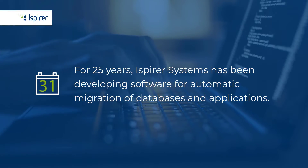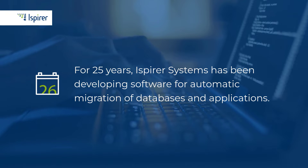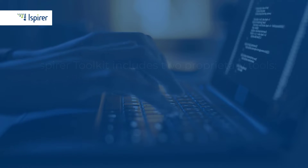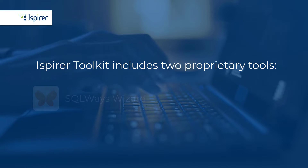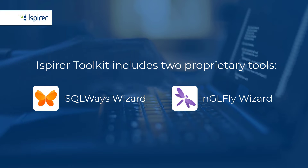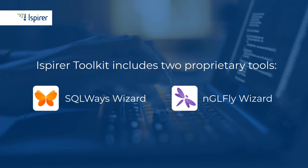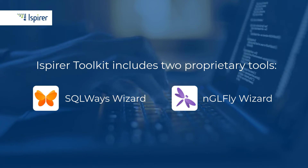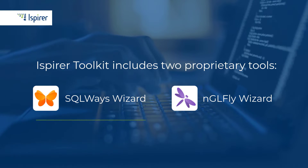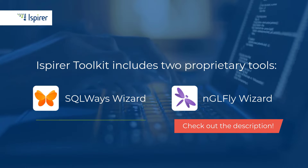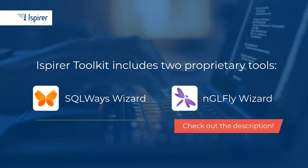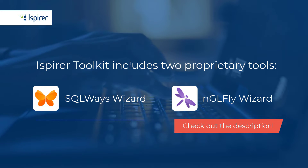Throughout its 25-year history, iSpyre Systems' focus has been on automation of database and application migrations. At the core of our offering is iSpyre Toolkit, which includes two proprietary tools: SQL Waze Wizard for database migration and NGL Fly Wizard for application modernization. In this video, we will take a closer look at iSpyre SQL Waze Wizard, a tool for heterogeneous database migration. In the description below, you'll find a link to a video about NGL Fly Wizard for future reference.